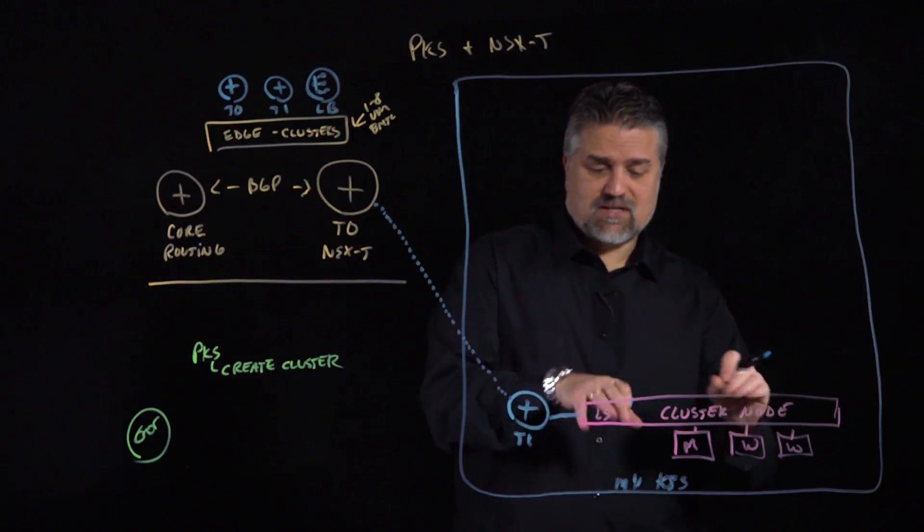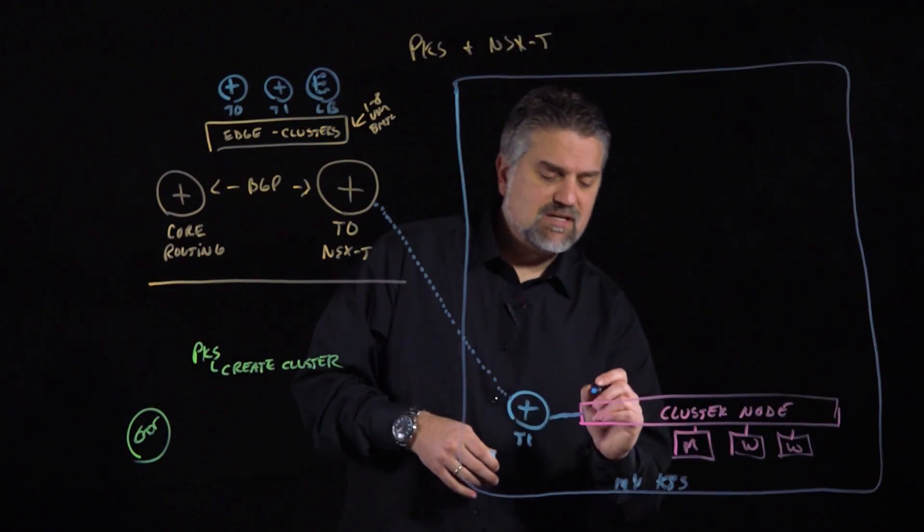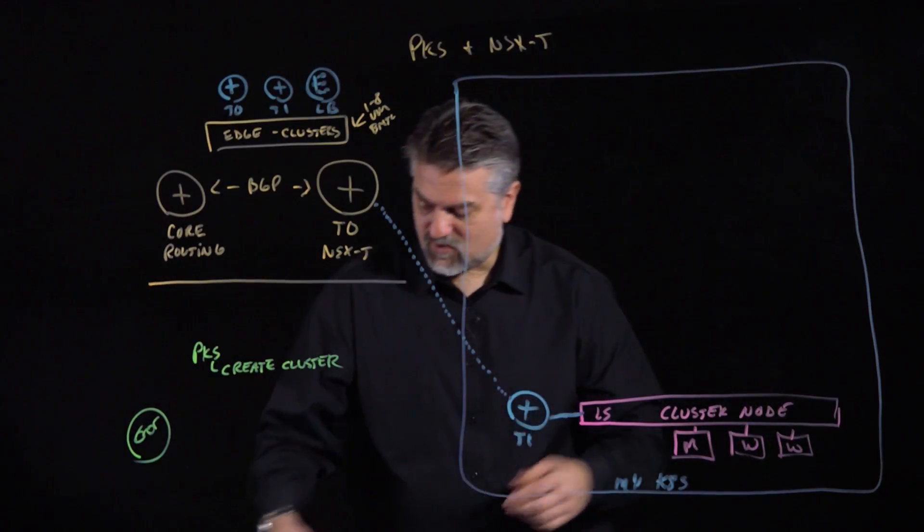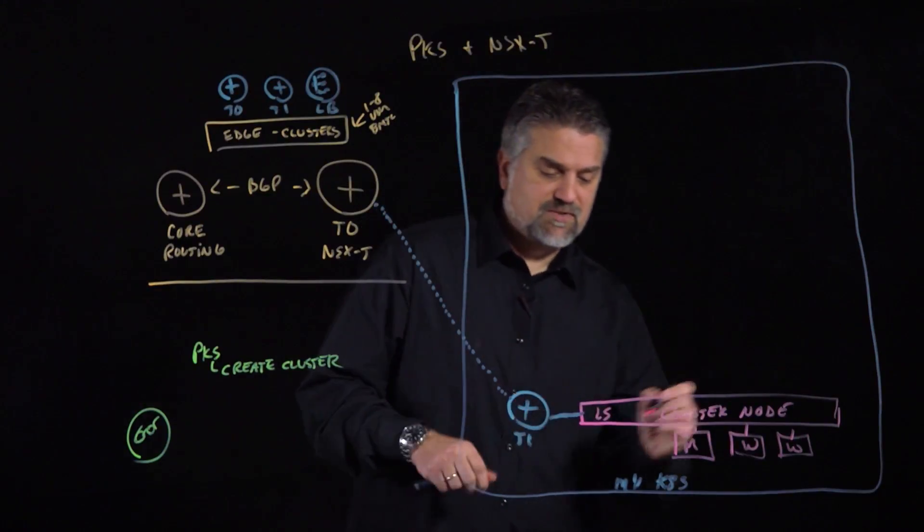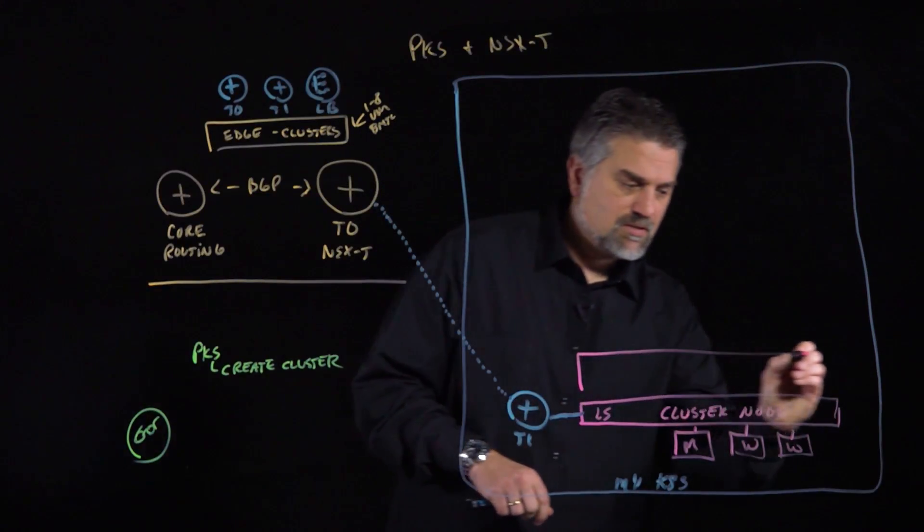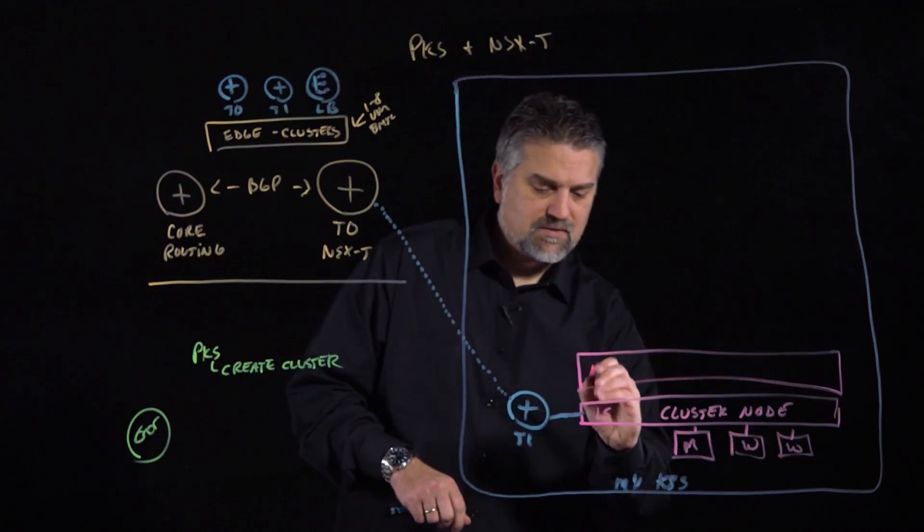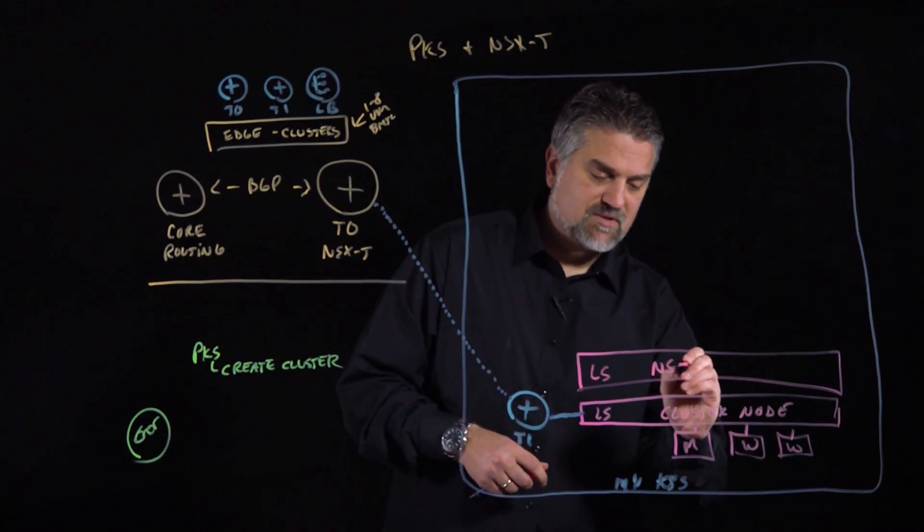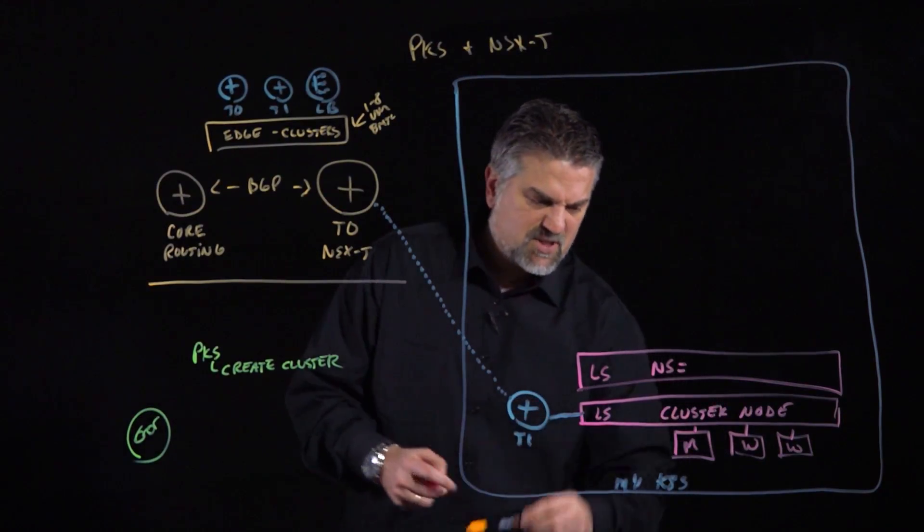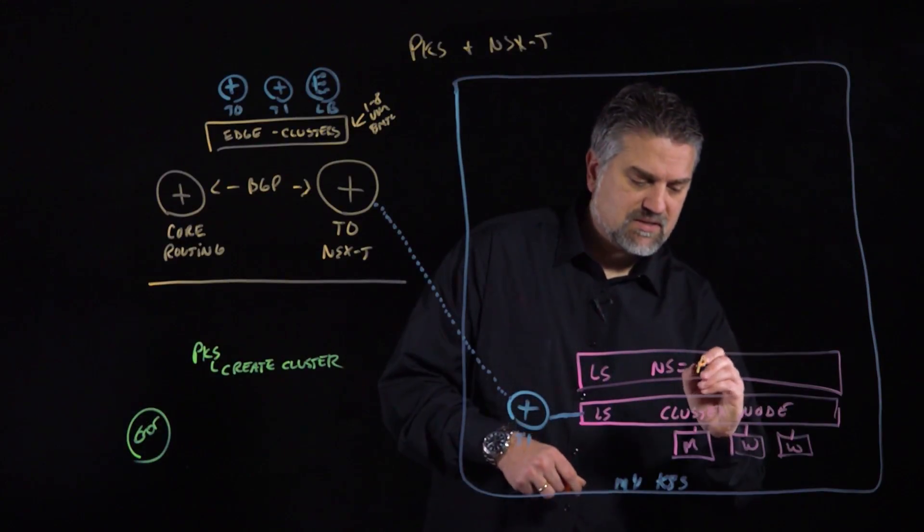In addition to this logical switch, we're going to have two other key logical switches that are going to be created whenever our cluster create command took place. We're going to have another logical switch that's going to be created for a namespace. We'll just use NS for the namespace. And that namespace, a special namespace, is called PKS Infra.